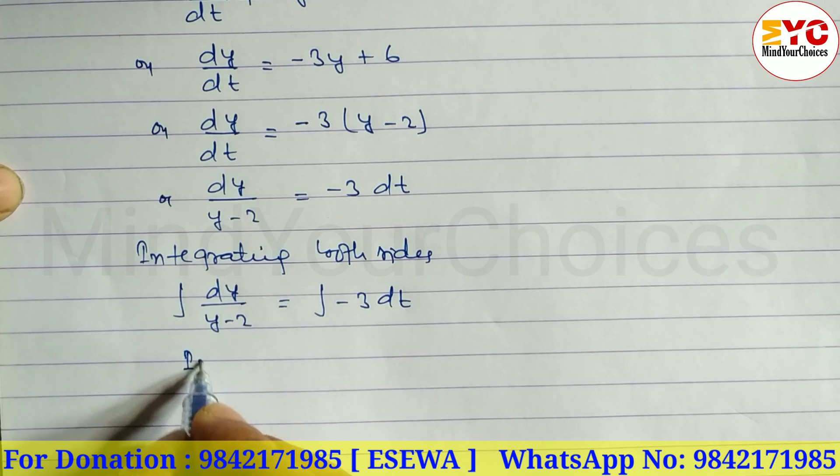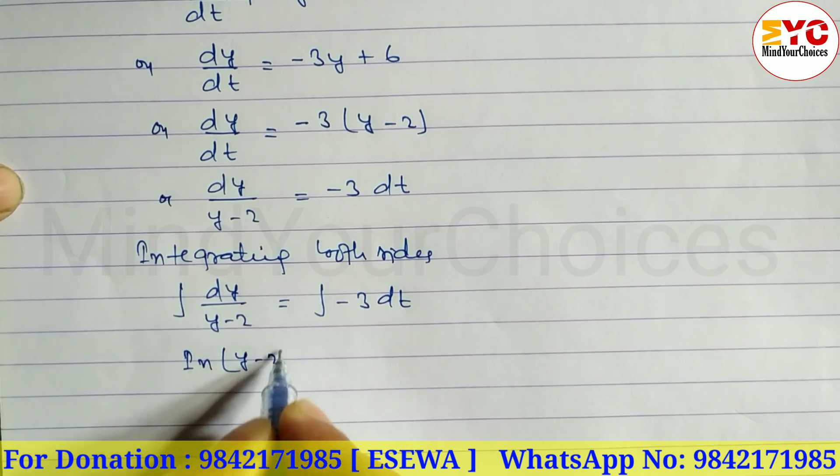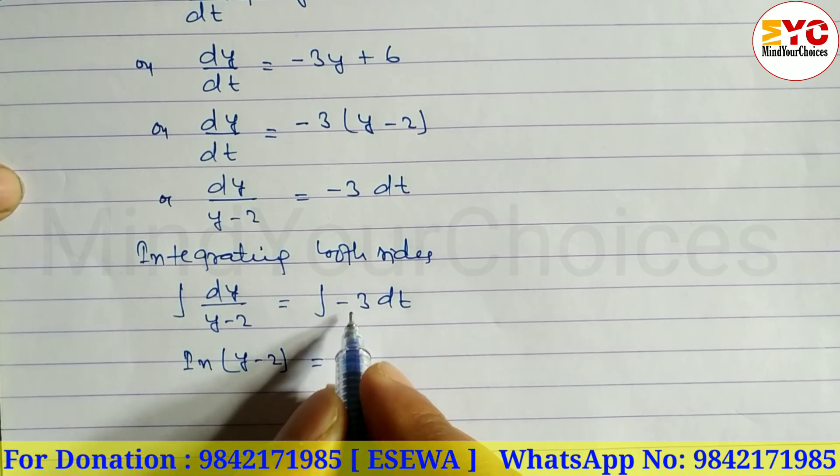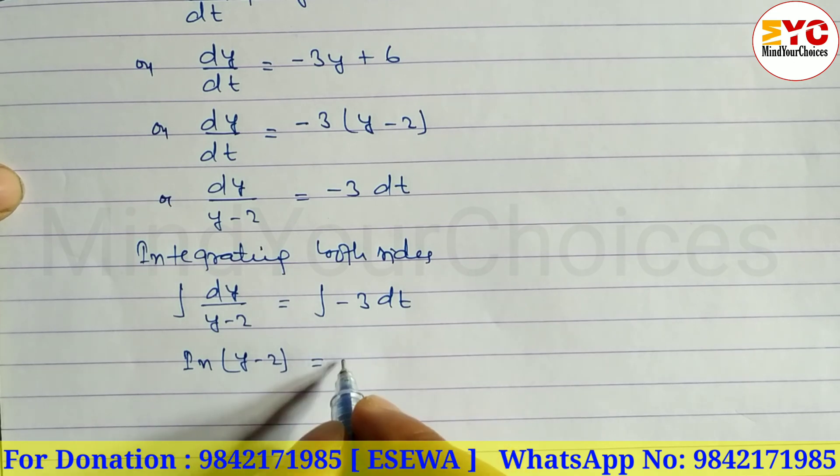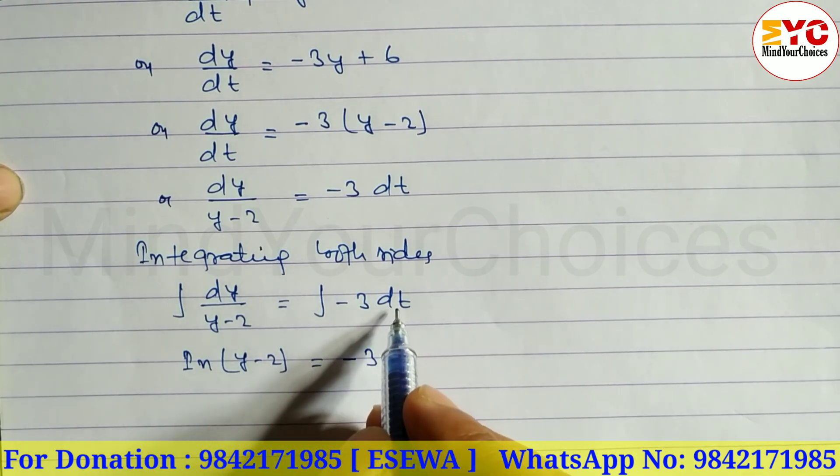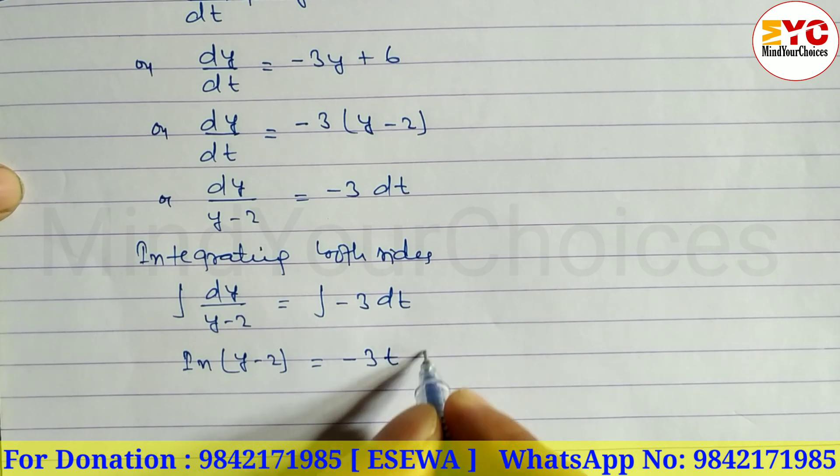Integration of dy/(y-2) gives ln(y-2). Minus 3 dt: minus 3 is constant, so integration of dt gives t, making this minus 3t plus ln c.